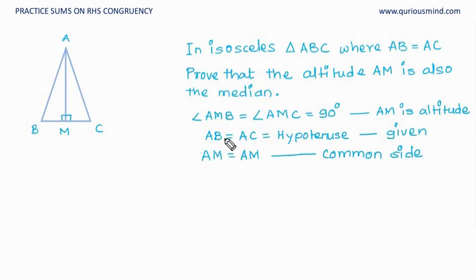So by RHS congruency we can say that the triangles AMB and AMC are congruent.